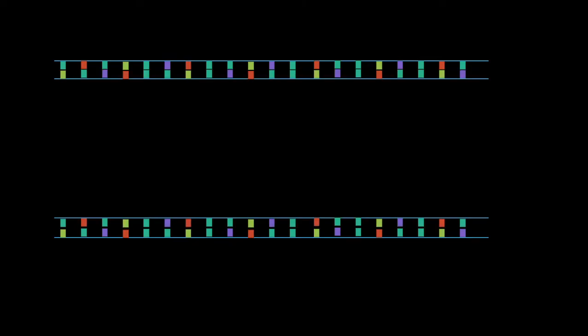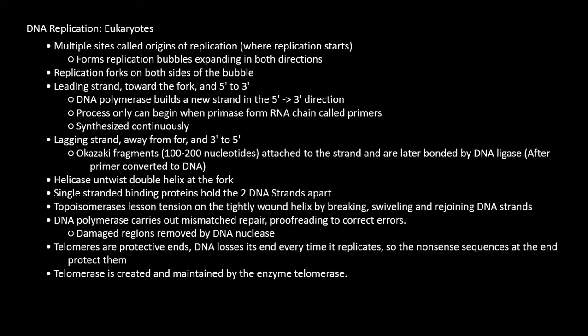This is just a quick recap of everything we went through. If you need to pause to look at it, be my guest. But I do want to discuss topoisomerase and telomeres, these things we weren't able to cover in the drawings. Topoisomerase lessens tension on the tightly wound DNA by breaking, swiveling, and then rejoining DNA strands. And telomeres are protective ends. DNA loses its ends every time it replicates, and to make sure that these ends aren't needed DNA or coding DNA, the telomeres protect the ends.